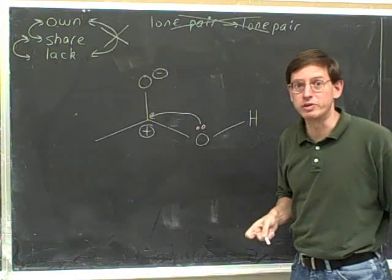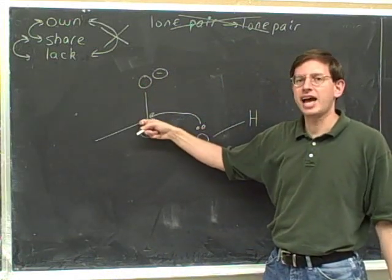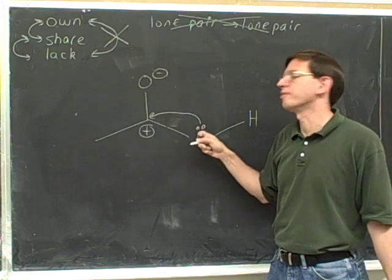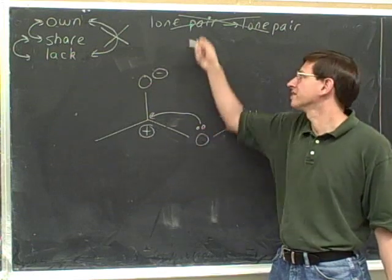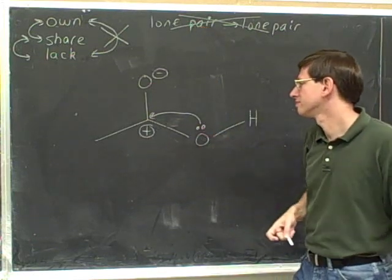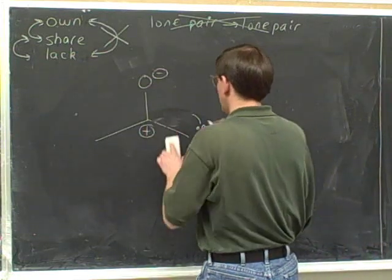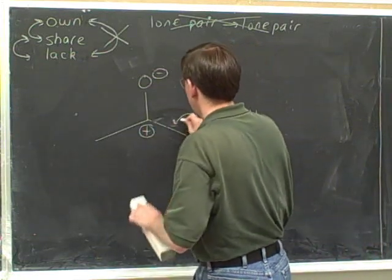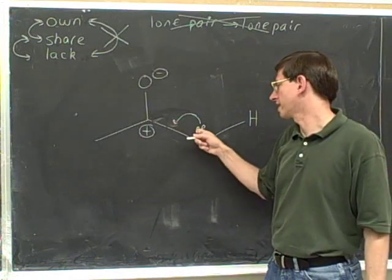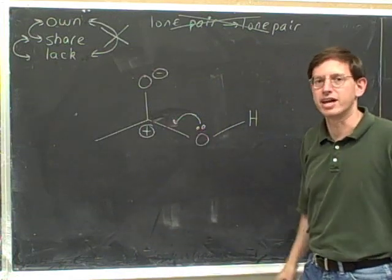This would be wrong — you can't put the head directly on the atom, because that would be forming a lone pair from another lone pair, which is what you're not allowed to do. But pointing the head to the middle of the bond is fine, because then we're taking a lone pair and making a pi bond. That's okay.